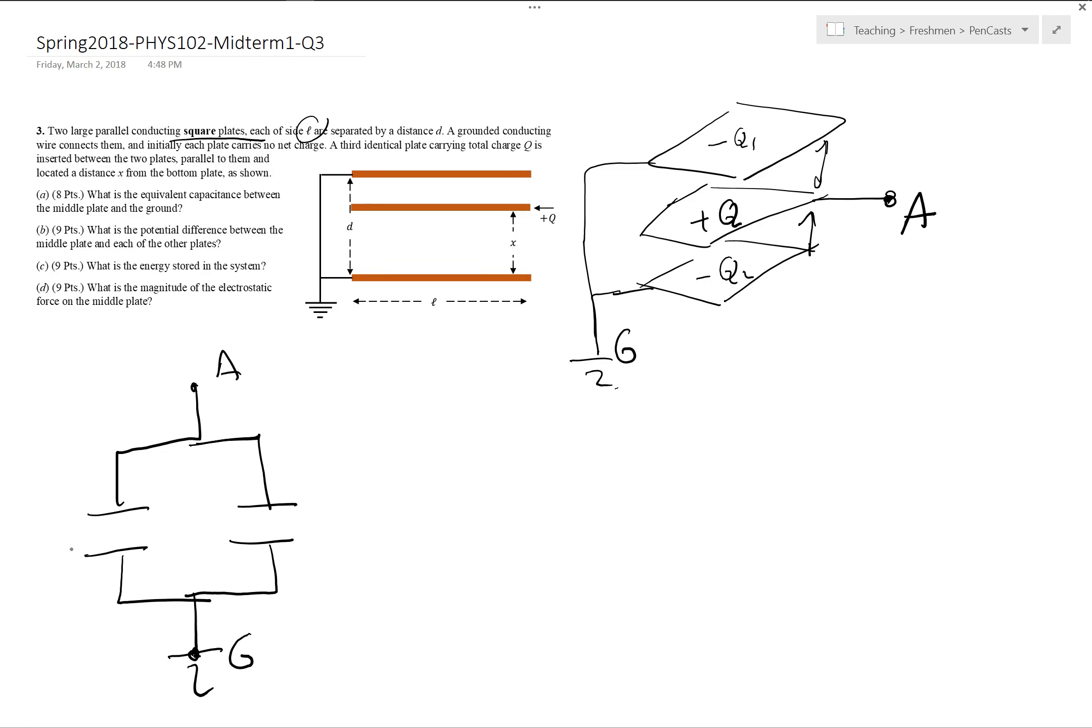What's the distance of the upper capacitor between the plates? This distance is D minus X. How about the lower capacitor? That distance is X. So what's the equivalent capacitance of two capacitors in parallel? I just add those.